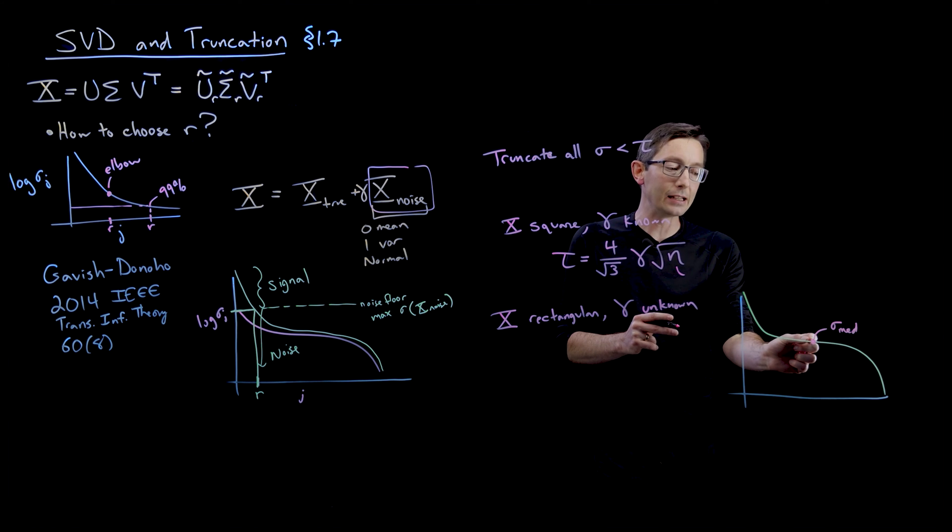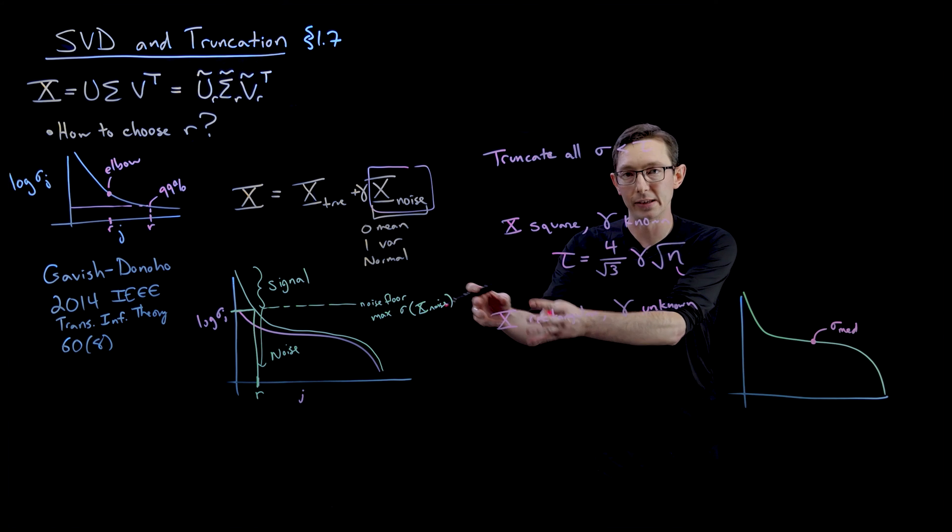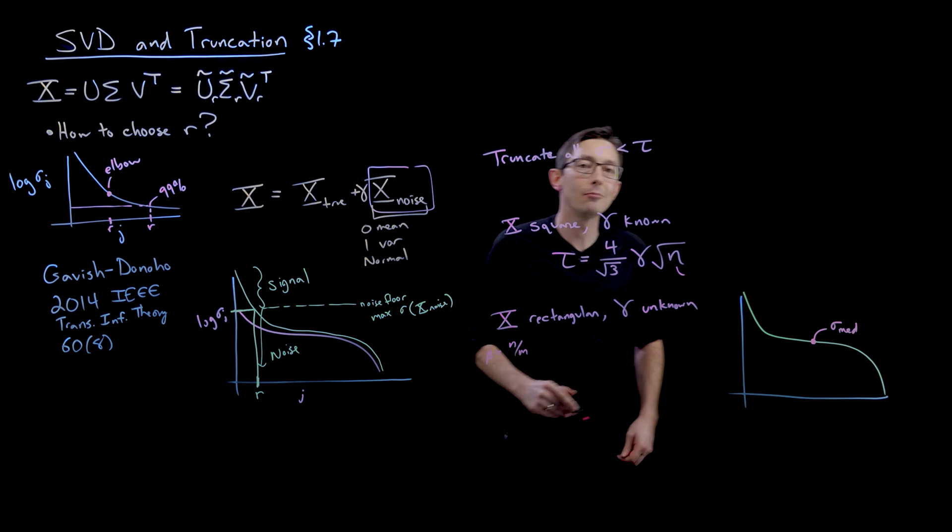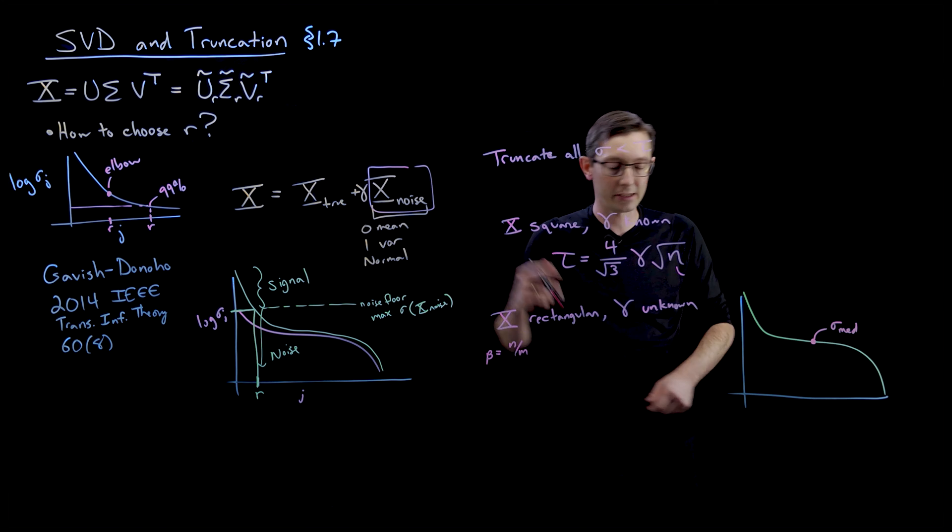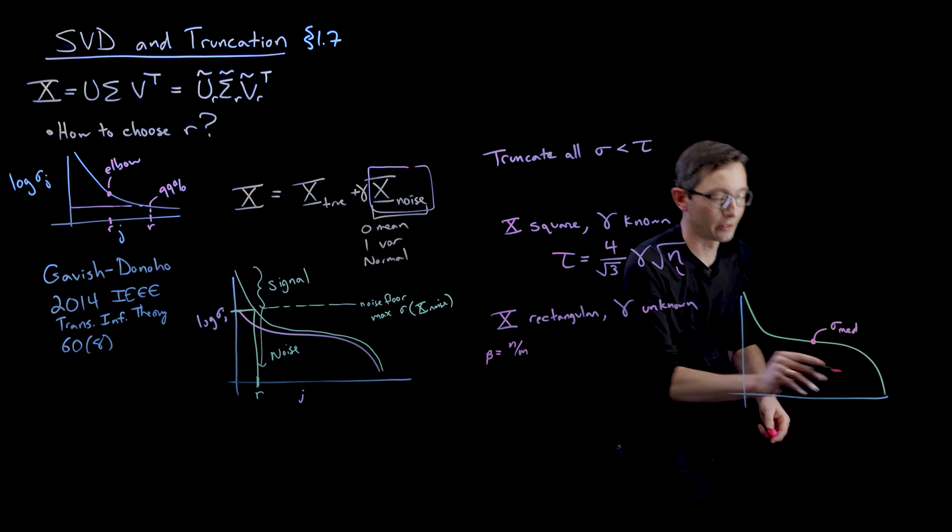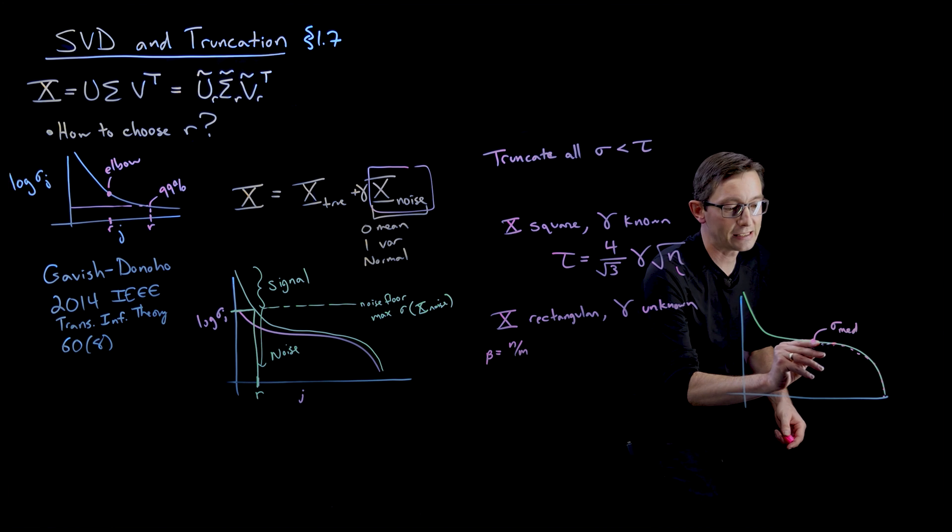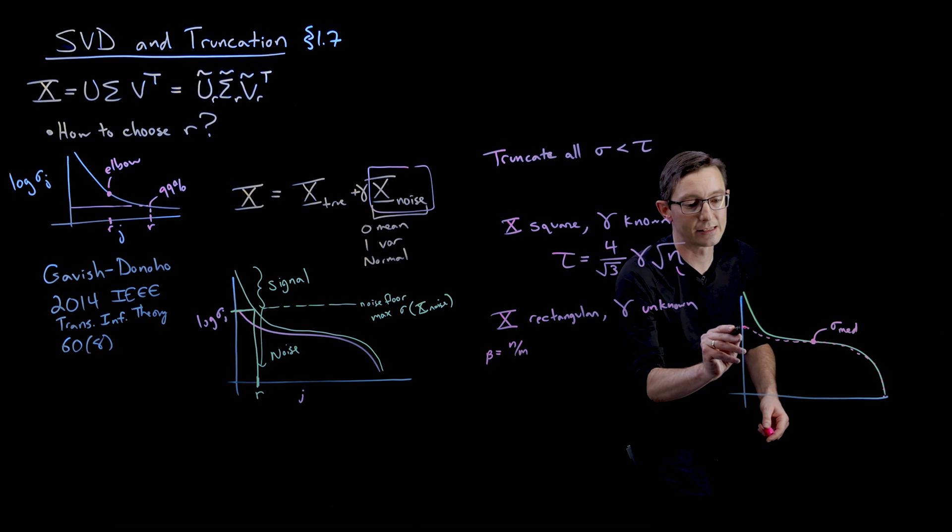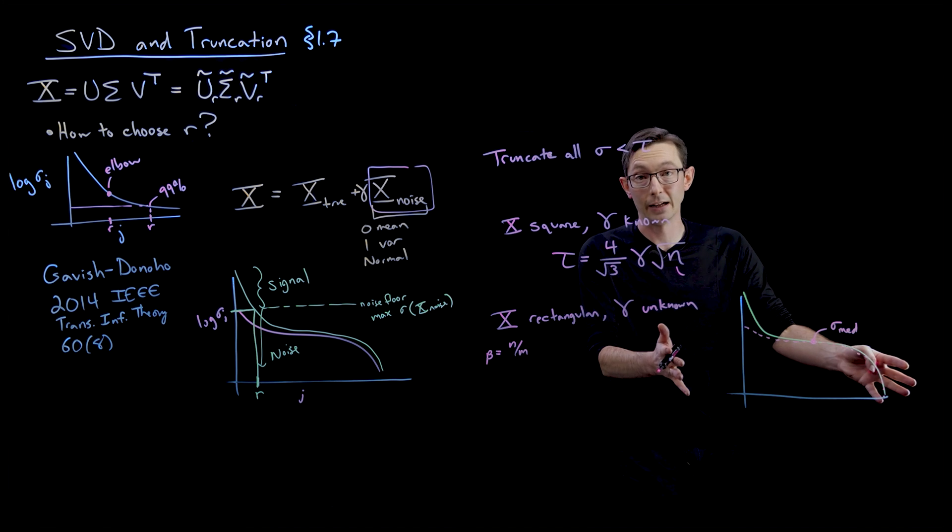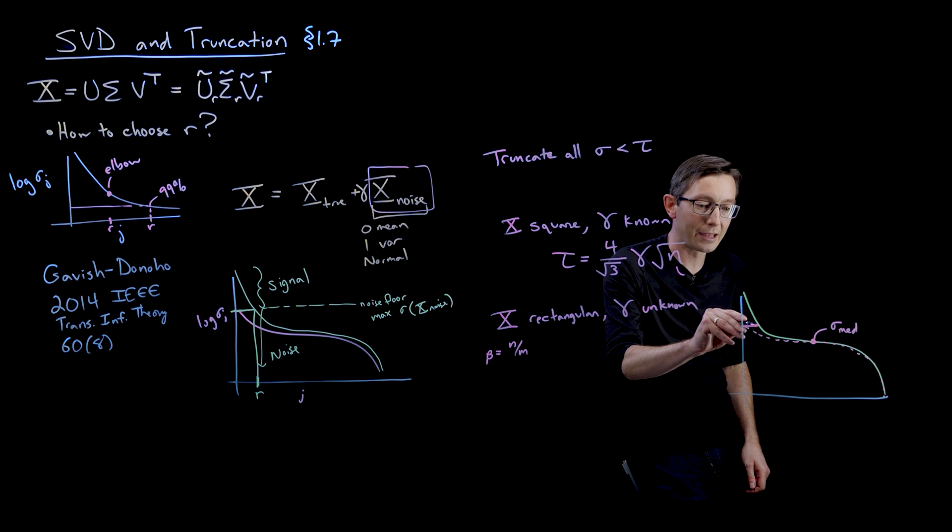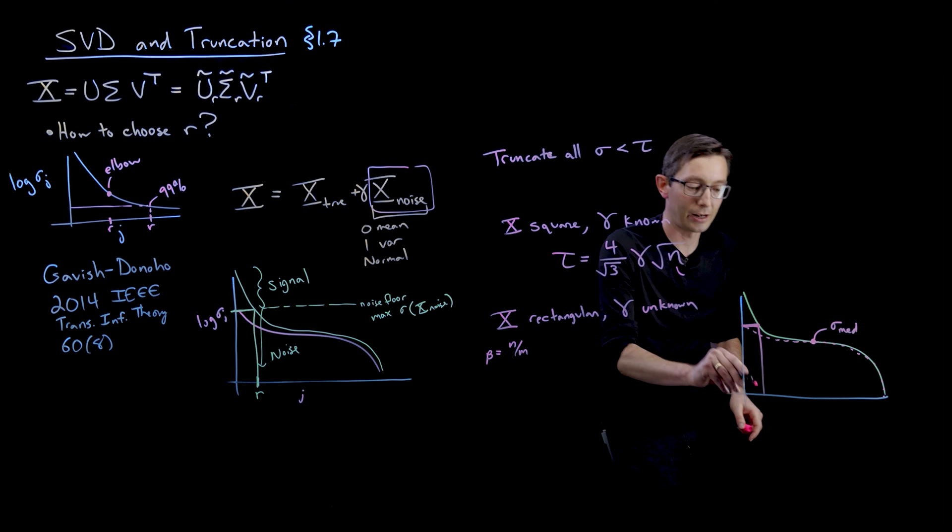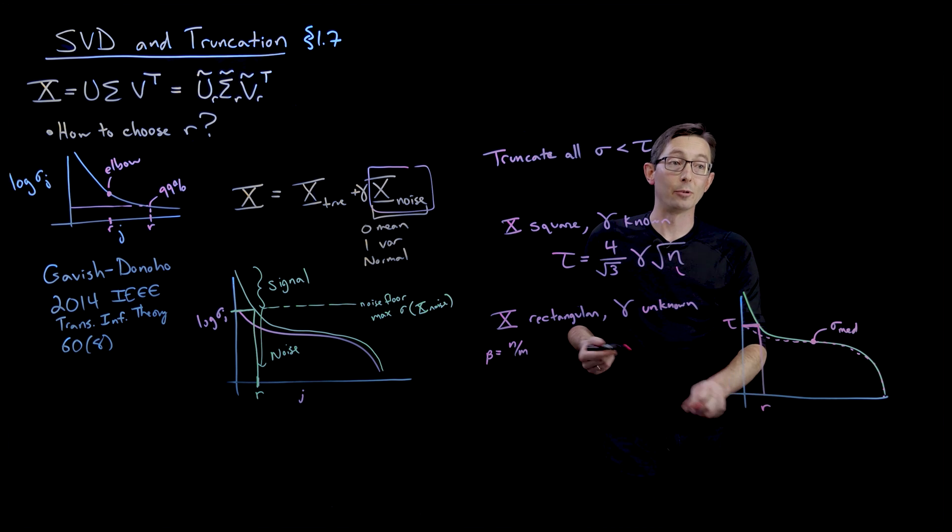And from that median singular value and the aspect ratio, the shape of this rectangular matrix, we're going to call that beta, is kind of N divided by M or M divided by N depending on what size the matrix is. So based on this median singular value and this aspect ratio of this rectangular matrix, they can infer the best fit noise distribution that's consistent, assuming that this median singular value is in the noise floor, which is a good assumption if I have enough data. Then they can again infer what the max singular value of this red noise distribution is and determine what this tau to threshold is to give us this optimal rank R.